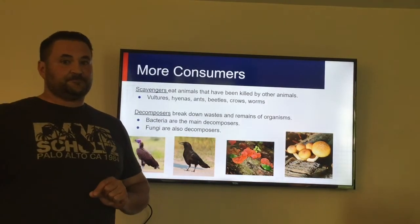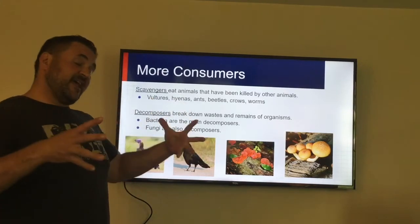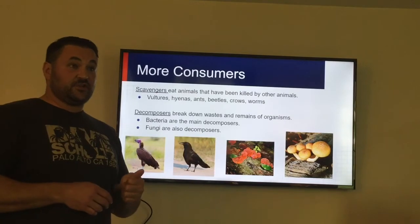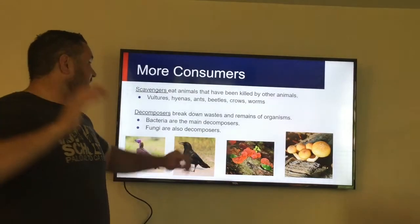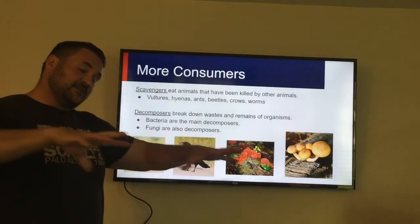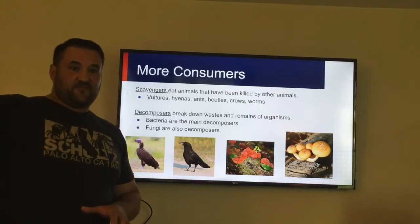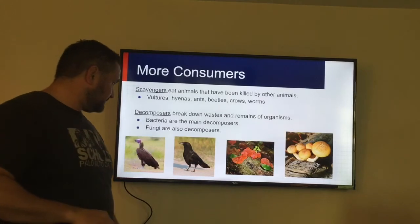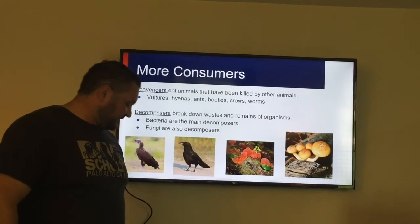Decomposers are the ones you don't see. Decomposers break down the material of dead organisms — whether it's dead grass in your yard because you cut the grass, or the dead deer laying along the highway. These are going to be your bacteria and fungi that actually break down the nutrients so that it goes back into the soil. So everything on earth gets recycled again. Here's the vulture, there's your crow, and then there are some types of fungus.